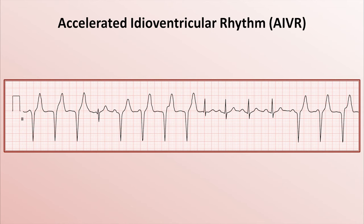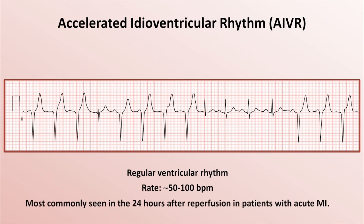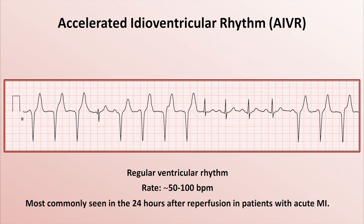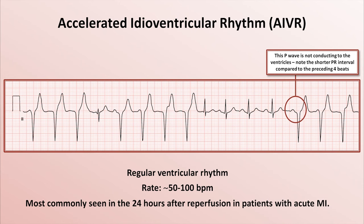If a ventricular rhythm has an even slower rate, it is referred to as an accelerated idioventricular rhythm, or AIVR. The rate here is 50 to 100 beats per minute. It's most commonly observed in the 24 hours after reperfusion in patients who have experienced an acute MI. While you might initially mistake this for sinus with aberrancy due to its slow rate, relatively narrow QRS complex, and occasional P waves, the presence of a fusion beat and multiple capture beats in this particular example means that the predominant rhythm must be ventricular. This is also a good example of isorhythmic AV dissociation, in which the sinus node is firing at almost an identical rate to the ventricular rhythm — giving the illusion that some P waves are being conducted prior to the wide QRS complexes. Isorhythmic dissociation also explains why this EKG can have multiple capture beats in a row.